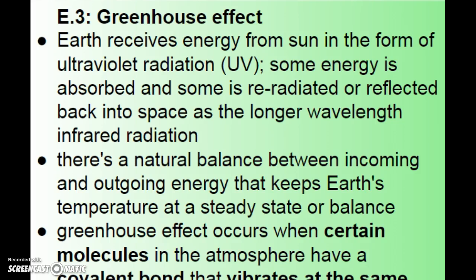The greenhouse effect is naturally a process that happens and is a good thing. The earth receives energy from the sun in the form of ultraviolet radiation, which is fairly high energy. Some of that energy is absorbed, but a lot of the sunlight we receive is reflected right back into outer space. Some is absorbed and then re-radiated back into space as a longer, lower energy wavelength called infrared radiation. There's a natural balance between the incoming and outgoing energy that keeps Earth's temperature at a steady state.